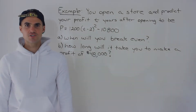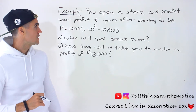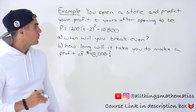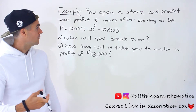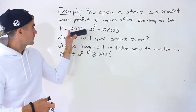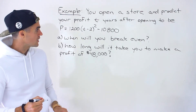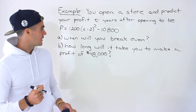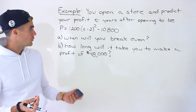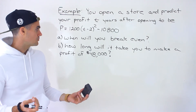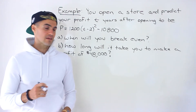Welcome back. Patrick here, moving on to another question dealing with quadratic equations. In this example, you open a store and predict your profit T years after opening to be P equals 1,200 times (T minus 2) squared minus 10,800. With that information, we're asked: when will you break even? And then Part B, how long will it take you to make a profit of $48,000?